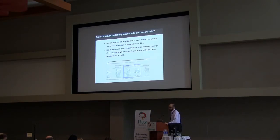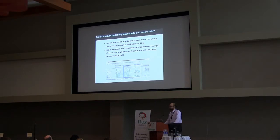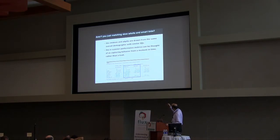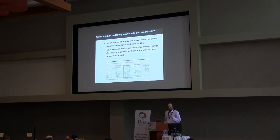Now, what often comes up is: aren't you just matching slow adults and smart kids? It's possible. In this data set that's not what's happening, but it's possible that is one thing that could come from performance matching. What I'll tell you is that these children are coming from the same demographic with similar overall IQs. The in-scanner performance metrics can be thought of as capturing a moment in time — their performance in a moment in time — and not as a trait.